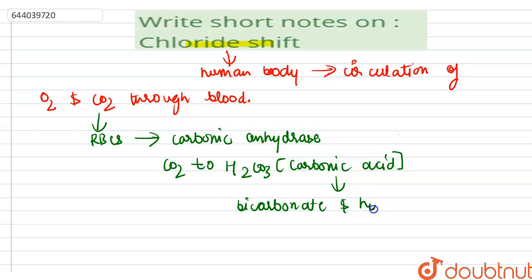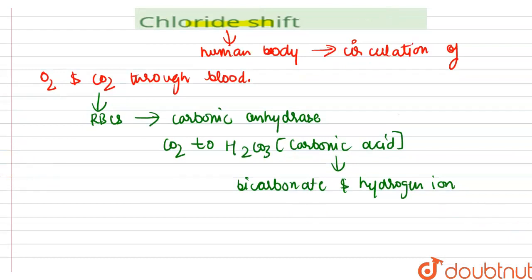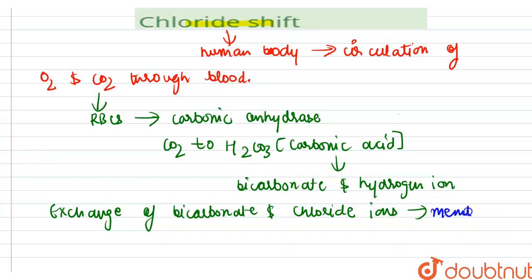After this, there is exchange of bicarbonate and chloride ions through the membrane of red blood cells or the membrane of RBCs.